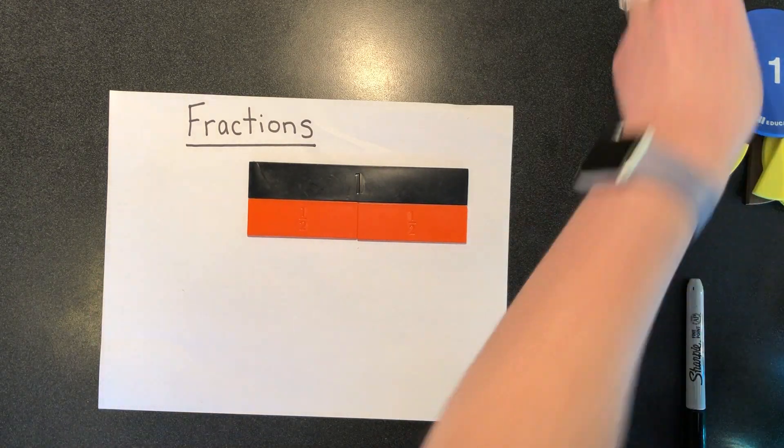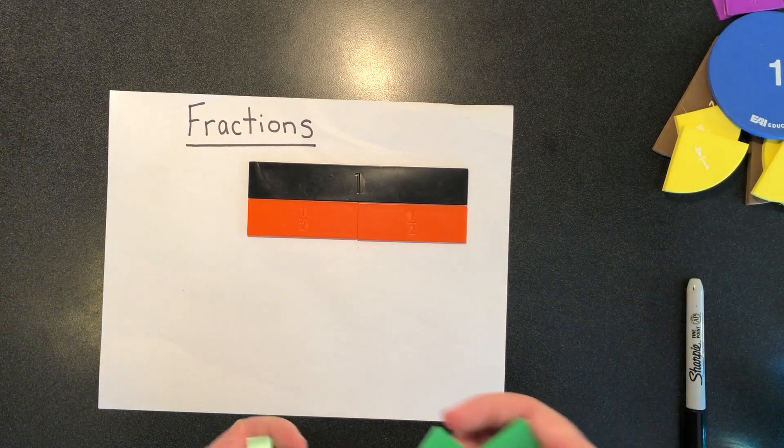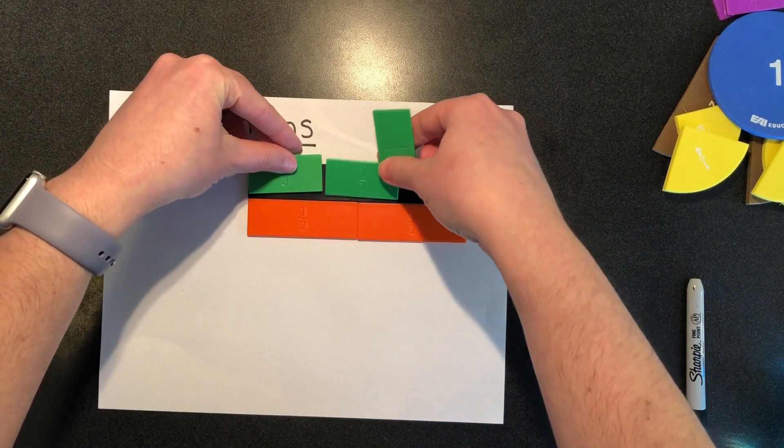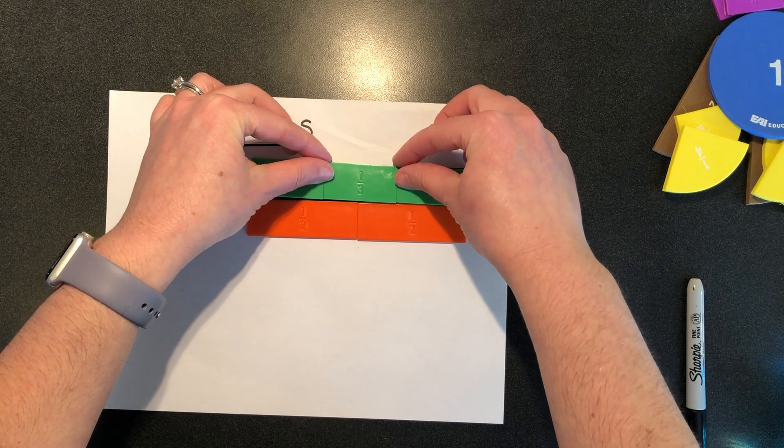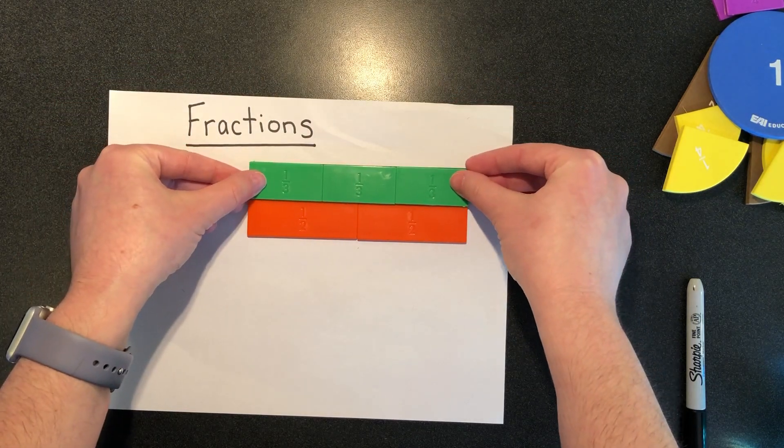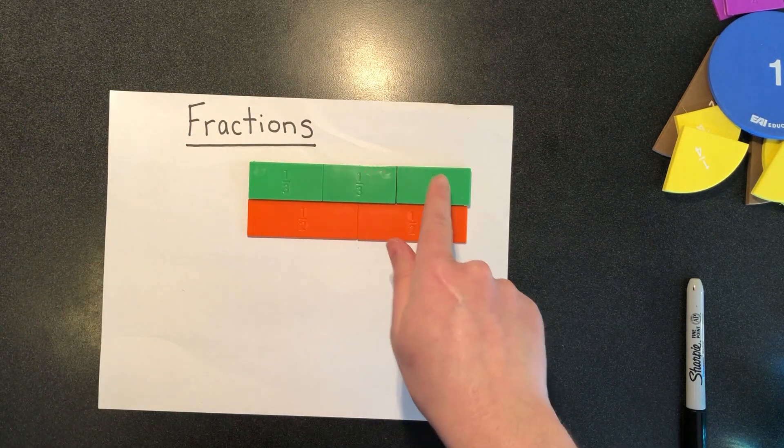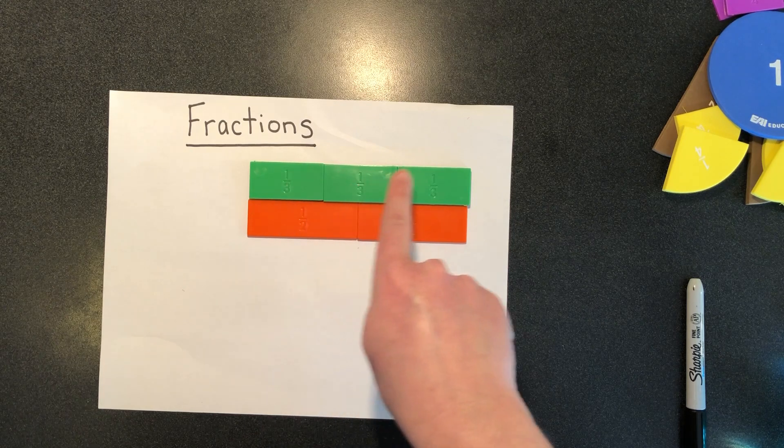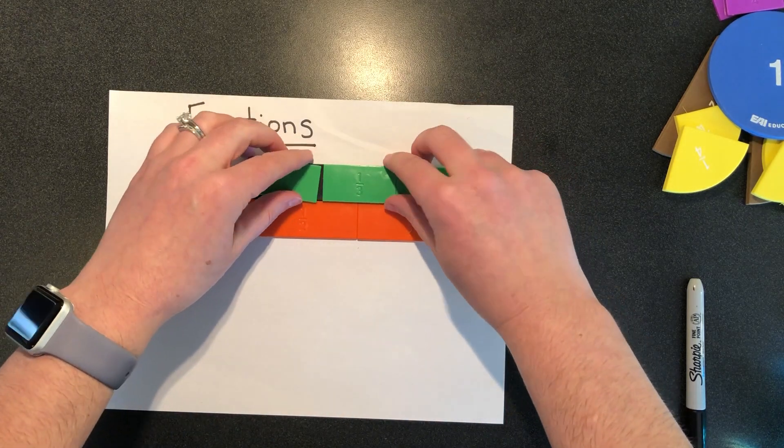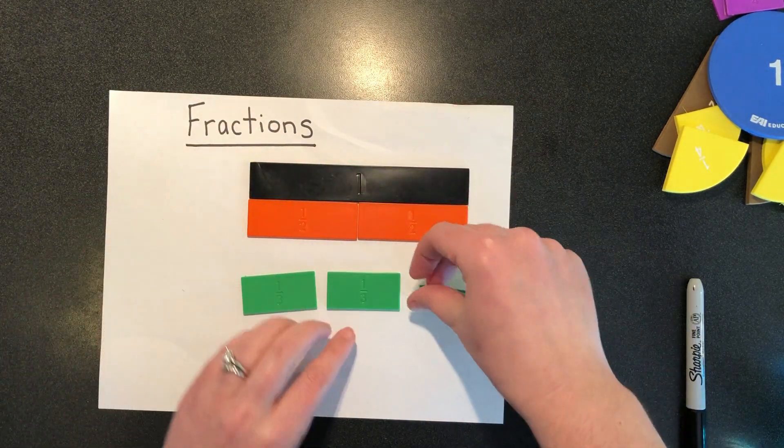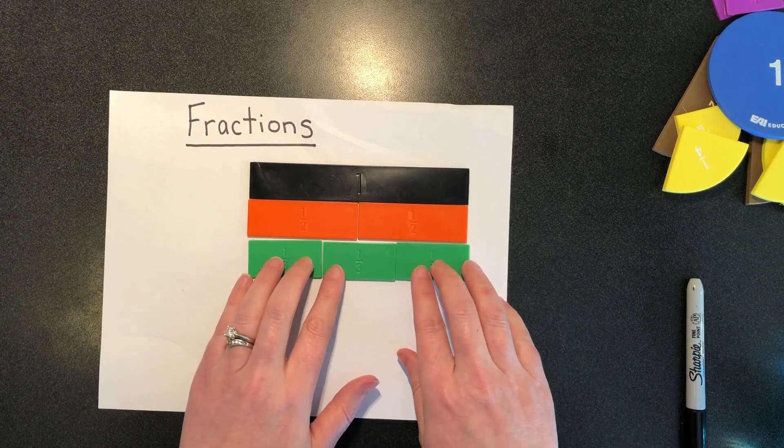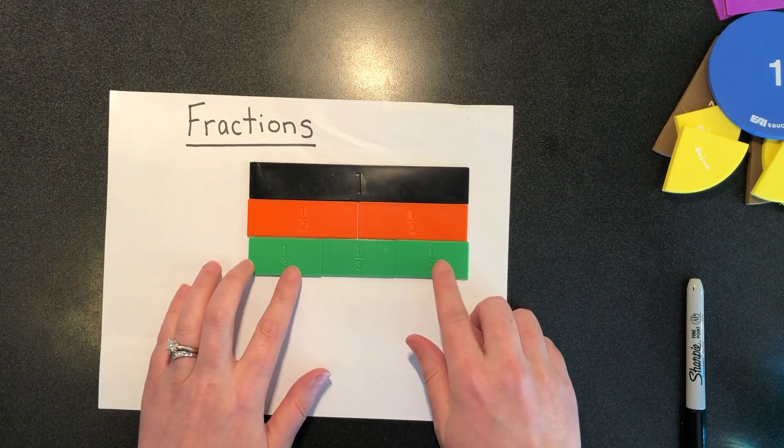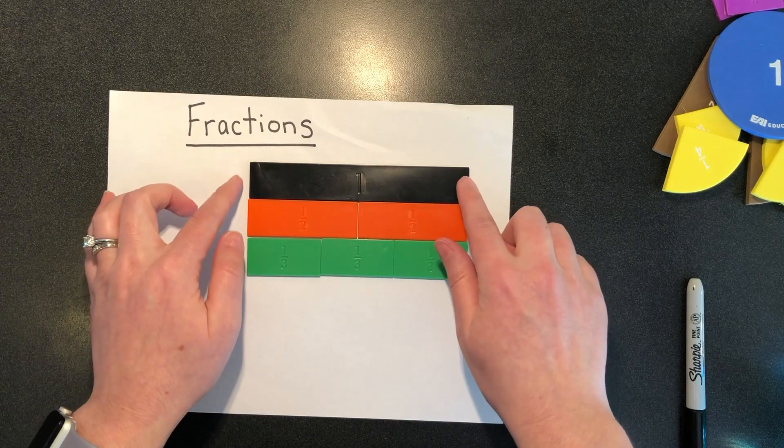If I were to break that whole into three equal pieces, I would have thirds. One third, two thirds, three thirds. Three thirds is the same as one whole, because I have all three of the thirds that I need to build that whole.